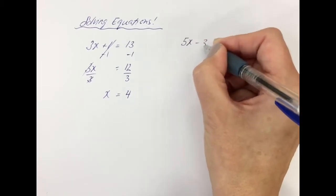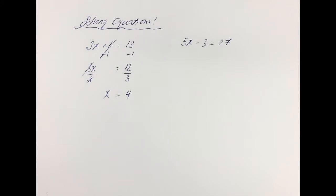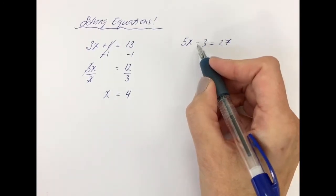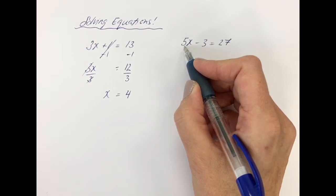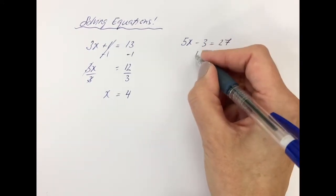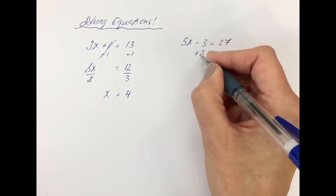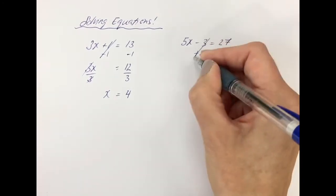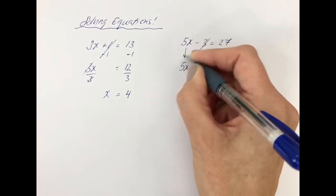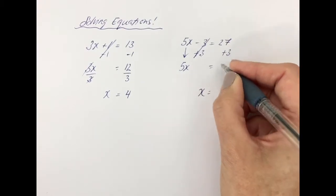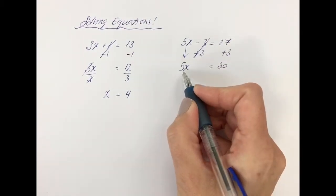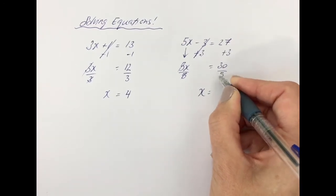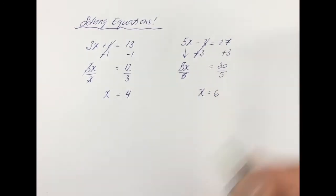Let's try another question: 5x minus 3 equals 27. Again, you want to get x on its own, so we need to get rid of the minus 3 and the times by 5. In order to get rid of minus 3, we would need to add 3, because minus 3 add 3 is nothing. If you add 3 to the left-hand side, you've got to add 3 to the right-hand side, leaving us with 5x equals 27 plus 3, which is 30. To get rid of the times by 5, we divide. 5 divided by 5 is 1x. Divide the right-hand side by 5 as well, so 30 divided by 5 is 6.